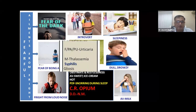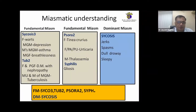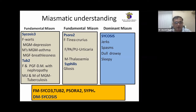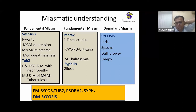For miasmatic analysis, the fundamental miasms were psycosis and tuberculosis, both having a lot of entries. Under tubercular miasm — mother, maternal uncle, and maternal grandfather all had tuberculosis. Father and paternal grandfather had diabetes mellitus with nephropathy. Sora and syphilis had one more entry each. The fundamental miasm order was: psycosis, then tuberculosis, then sora and psycosis. The dominant miasm was psycosis, indicated by jerks, spasm, dullness, drowsiness, and sleepiness.